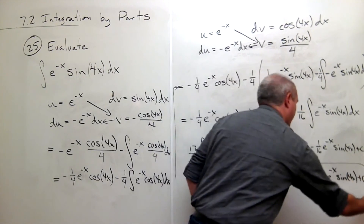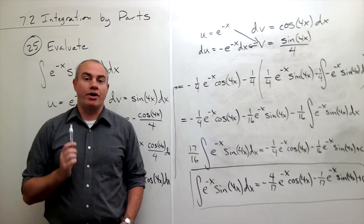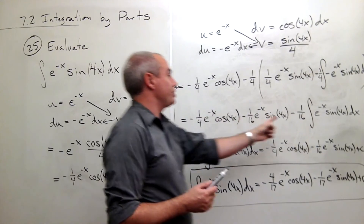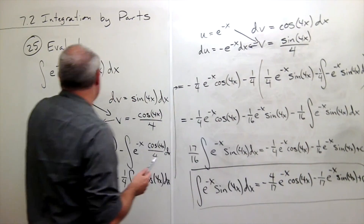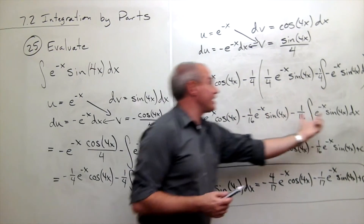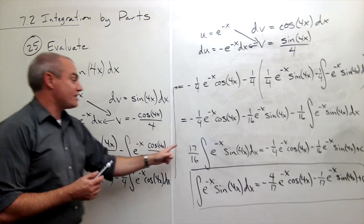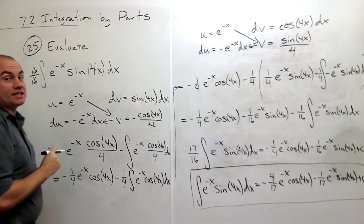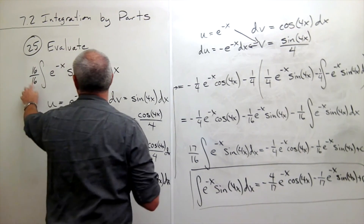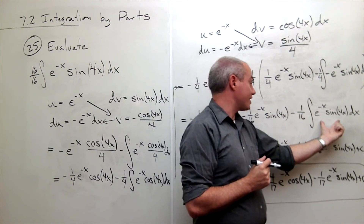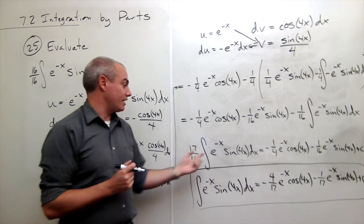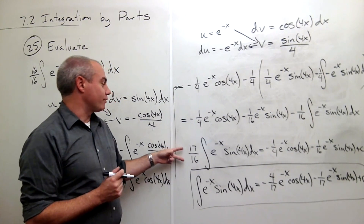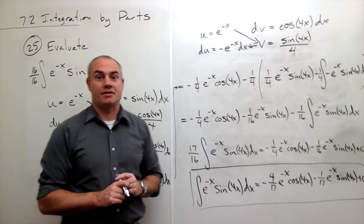And that is our answer. The most difficult part of this problem is recognizing that the integral that appeared at the end is exactly the one I started with, so I should take that term and add it to the other side of the equation. That's how I got 17/16: the original integral is 16/16 of itself, and adding another 1/16 gives 17/16. Then I just multiply both sides by 16/17 to get my answer, and we're done.